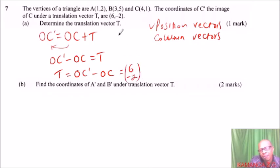Note here, I have just written the coordinates in a column form minus, this is C. The position vector of C will be 4 and 1. So, 6 minus 4, that will give you 2. And -2 minus 1, that will give you -3. This is a translation vector.